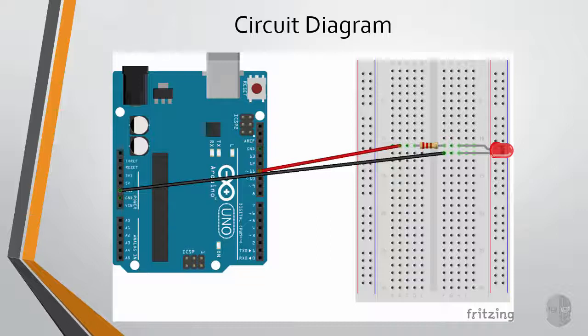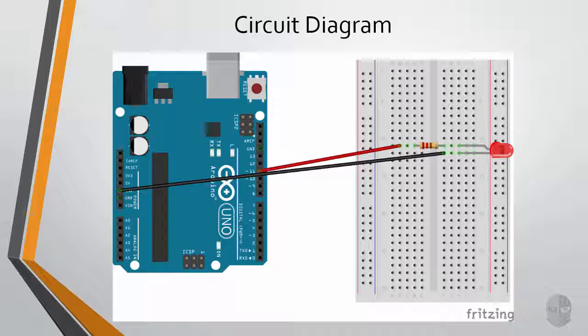This particular LED has two legs, so to speak, one called an anode and the other one called a cathode. Typically, the anode will be marked with a little curve, such as in this diagram, or the anode will be longer than the cathode, which is the case with the actual LED I will be using in the demo.